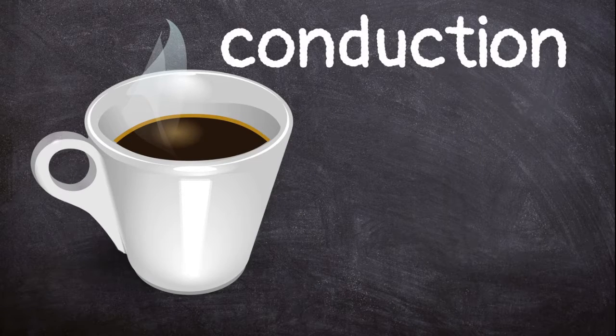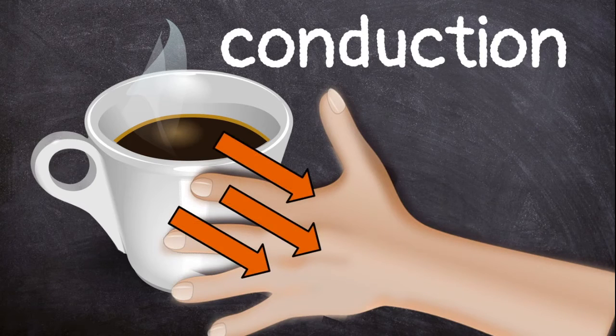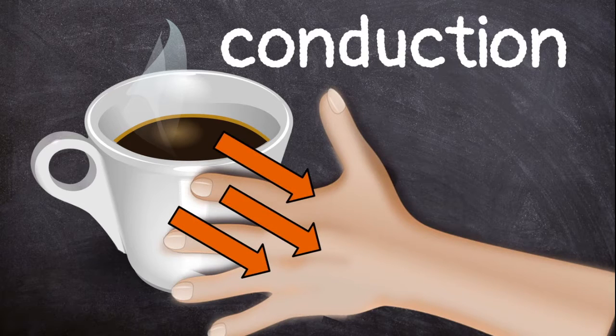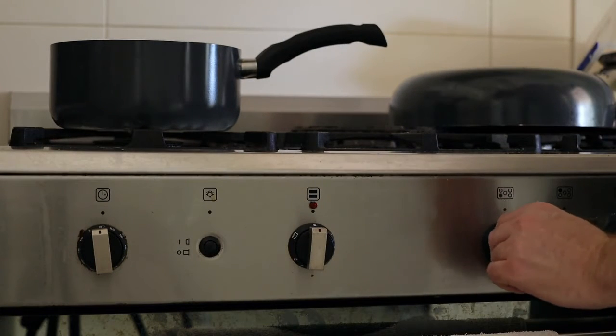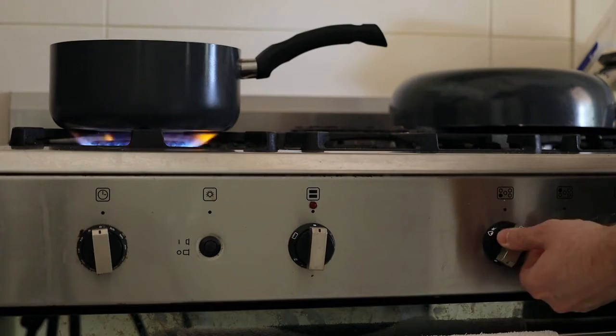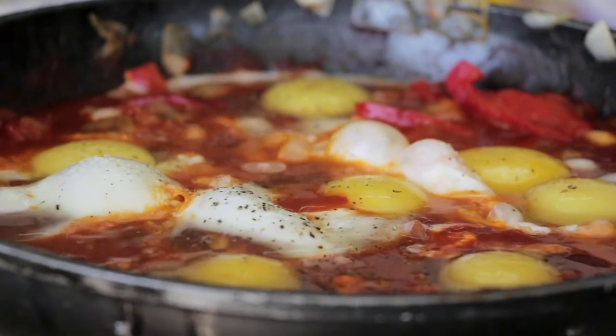Conduction happens when a hot object is touching a cold object. The heat moves from the hot object to the cold object. For example, if you place a metal pot on top of a hot stove burner, the pot will get hot. When the food you are cooking touches the hot pot, the food gets hot too.